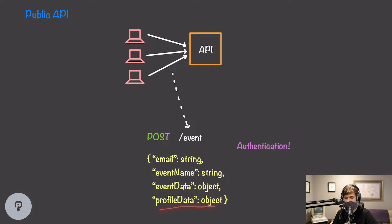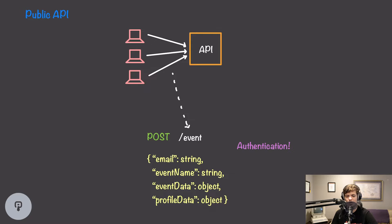We're also going to include profile data in this request, and if that field is included, we can use it to update any information we have about the profile. This data allows companies to access specific information about a profile that isn't specific to one particular event. Even though this API is public, we still want some form of authentication so we can determine what company this user is associated with. Emails are not unique within our system because multiple companies can track the same email address, so we'll use a public API key scoped to a specific company.